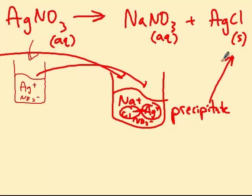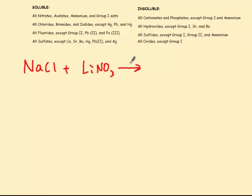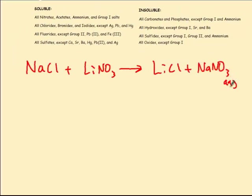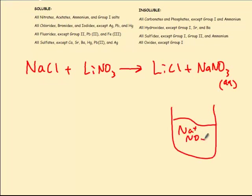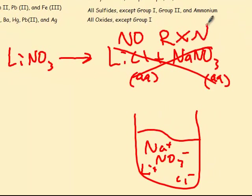Now if instead we react NaCl with lithium nitrate — again both aqueous reactants — we get lithium chloride and sodium nitrate. Sodium nitrate is a nitrate, so it dissolves. Lithium chloride is a chloride, and lithium is not silver, lead, or mercury, so this one also dissolves. That means on the right-hand side we get no reaction, because both products are soluble and dissolve away.